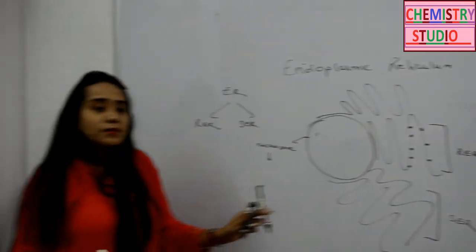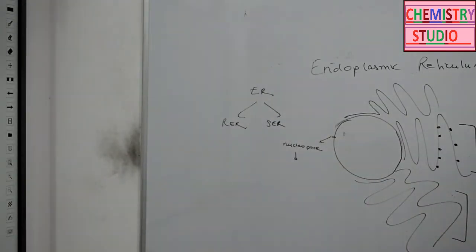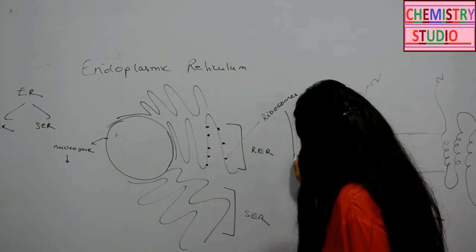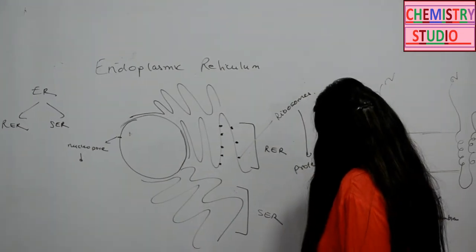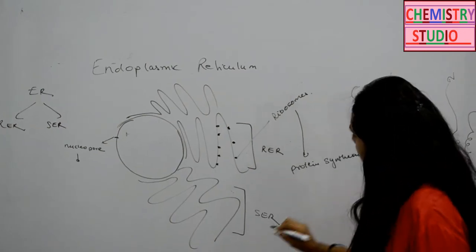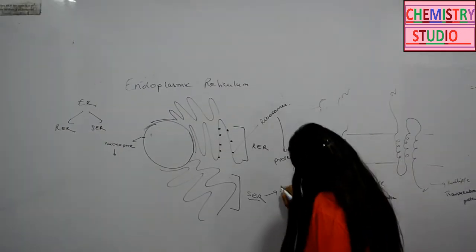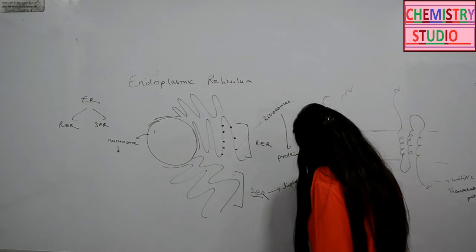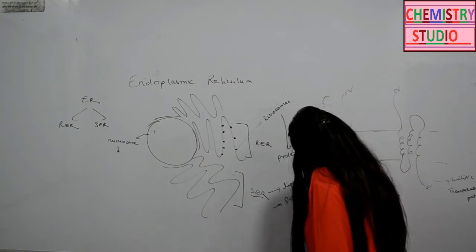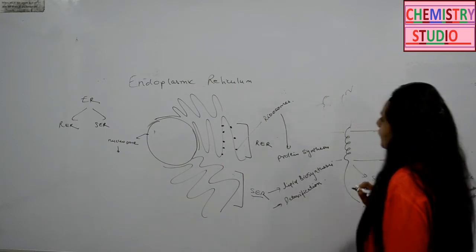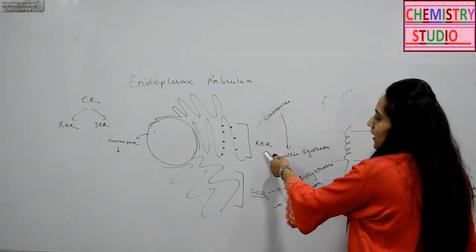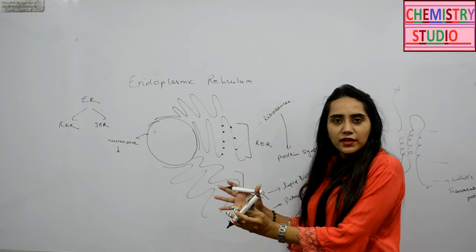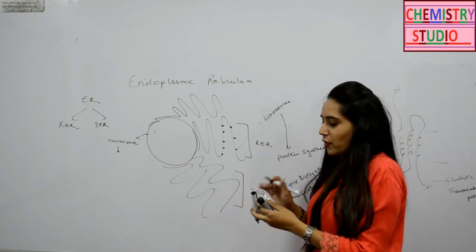The rough endoplasmic reticulum, because of the presence of ribosomes on it, has a function in the synthesis of protein. Whereas the smooth endoplasmic reticulum has a function in lipid biosynthesis and detoxification. After proteins are synthesized in the ER, they will move to the Golgi apparatus for packaging.